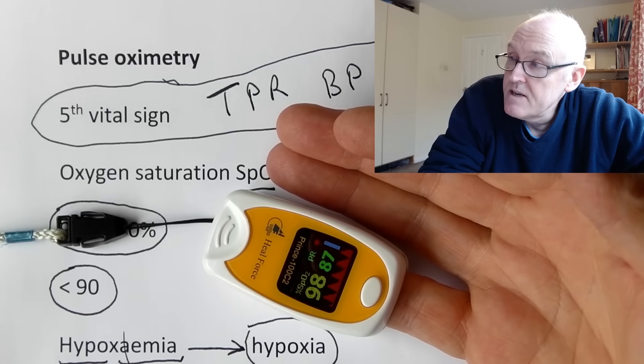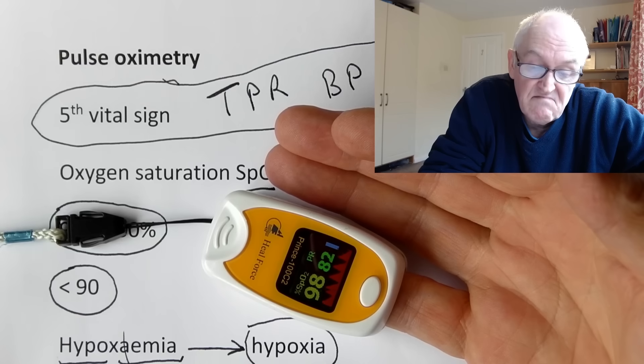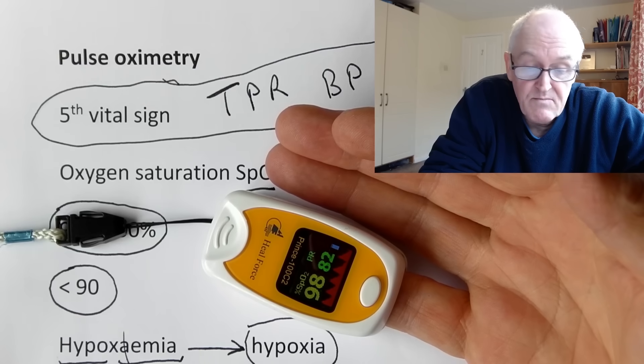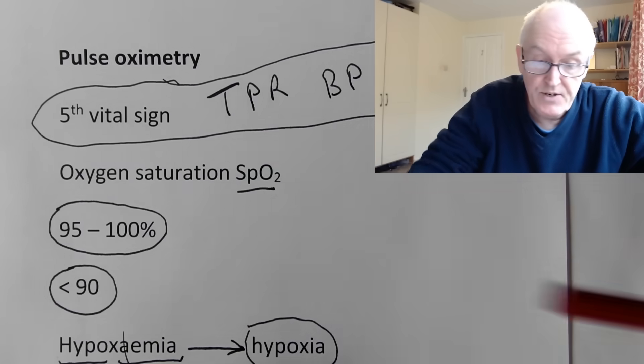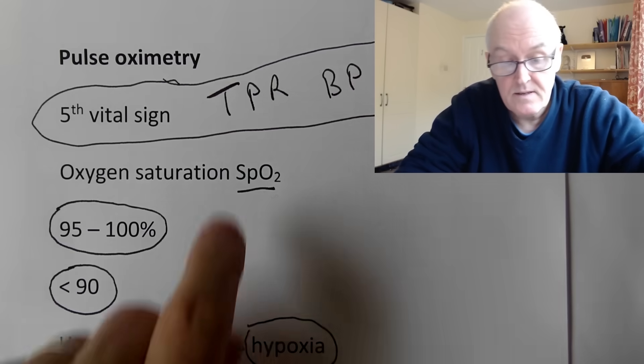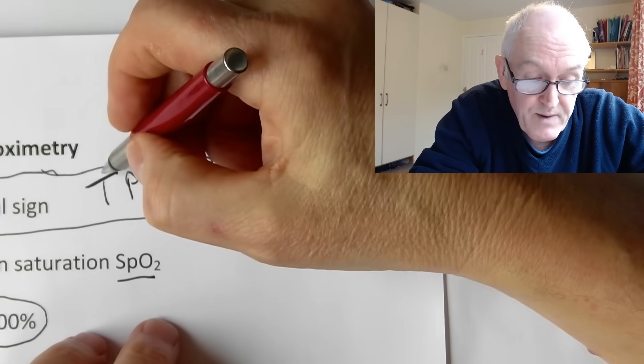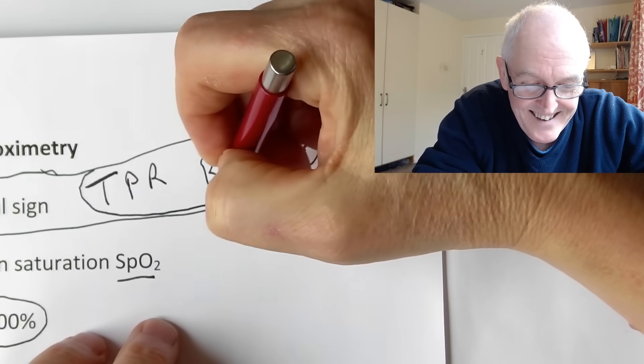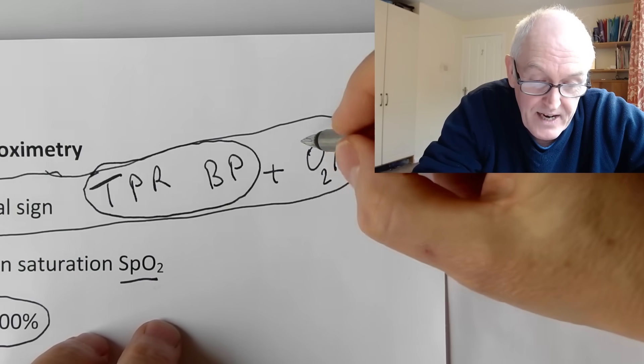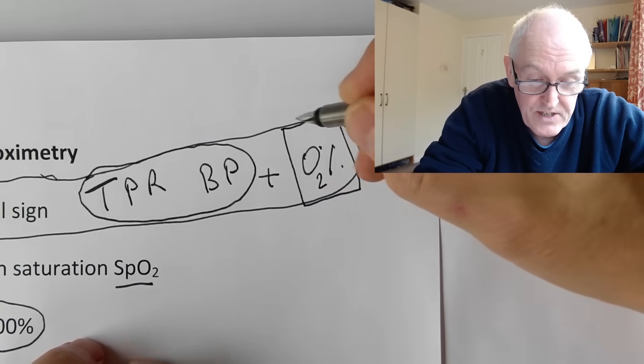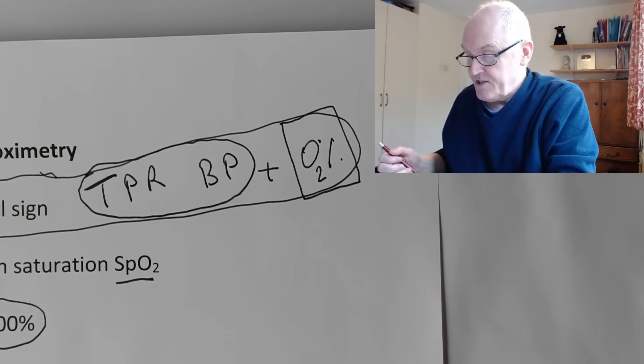My saturations are currently 98 and my heart rate is about 80. This is the fifth vital sign. The first four were temperature, pulse, respiration, and BP. I've been doing those pretty well every day of my life since I was 18. TPRBP. Now the fifth vital sign, oxygen saturation probes - no basic set of observations is now complete without oxygen saturations.